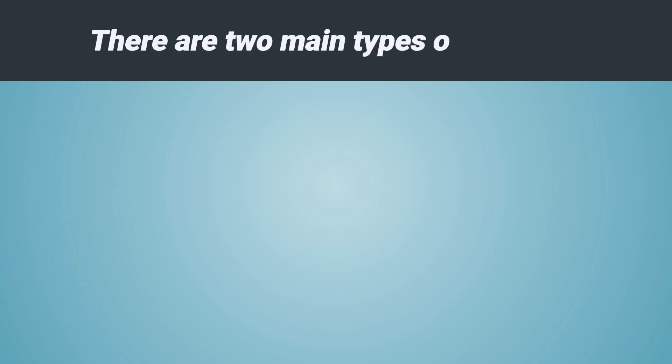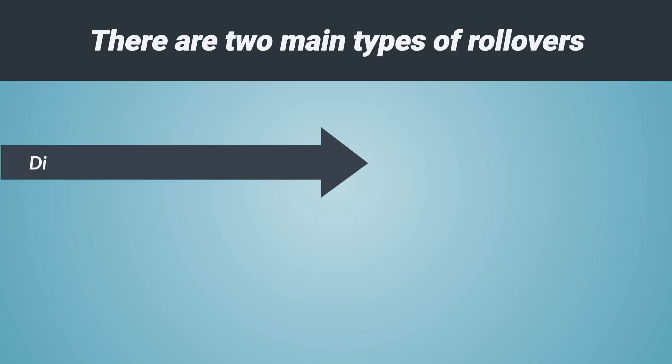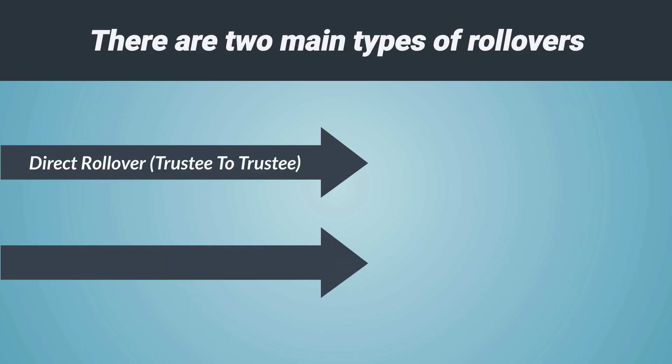There are two main types of rollovers: a direct rollover, also known as a trustee-to-trustee transfer, and an indirect rollover, also known as a 60-day rollover. Let's explore each option.